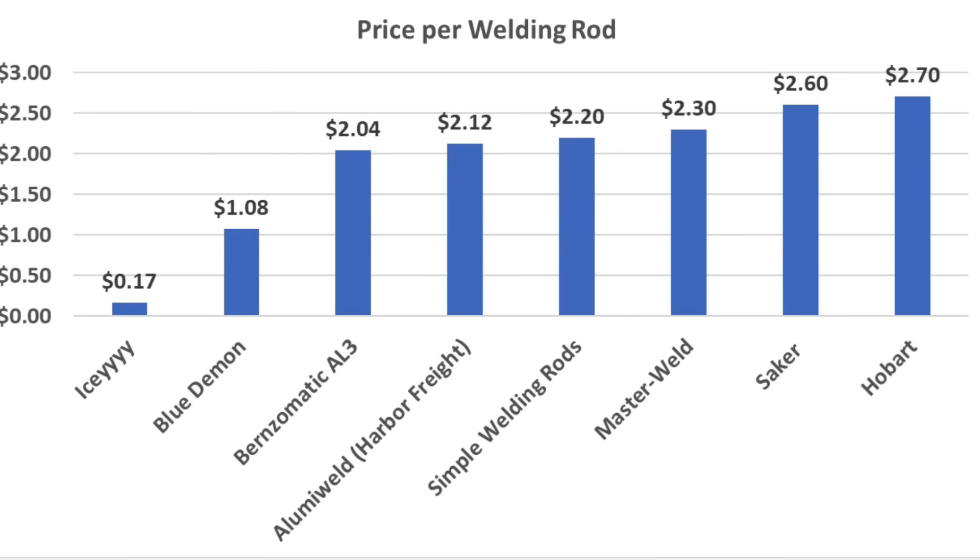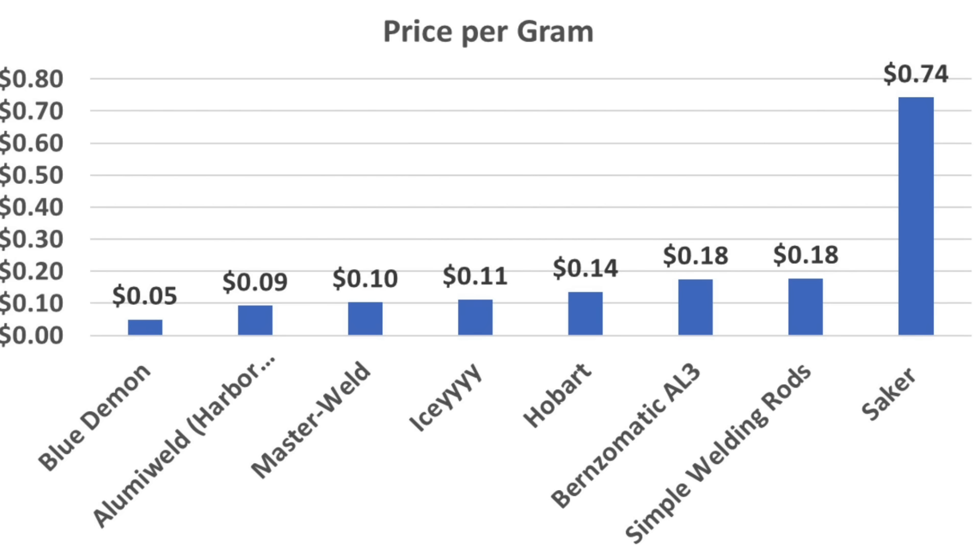Using price per welding rod probably isn't a very good way to compare value, since there's a huge difference in weight and length of the welding rods that we'll be testing. If we factor in the weight of the welding rods, looking at price per gram, Blue Demon is the least expensive brand, then Aluma Weld, Master Weld, Icy, and Hobart, respectively.